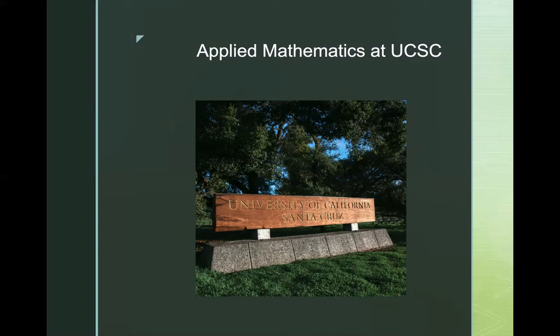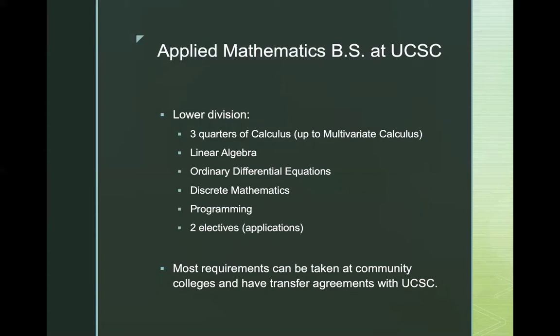The newly formed Department of Applied Mathematics at UC Santa Cruz now offers an undergraduate degree in applied mathematics. This undergraduate degree has lower division and upper division requirements. The lower division requirements are three quarters of calculus, including multivariate calculus, one quarter of linear algebra, one quarter of ordinary differential equations, a quarter of discrete mathematics including proofs, and a quarter of basic programming. It also requires students to take two electives, which will prepare them to better understand areas of application.